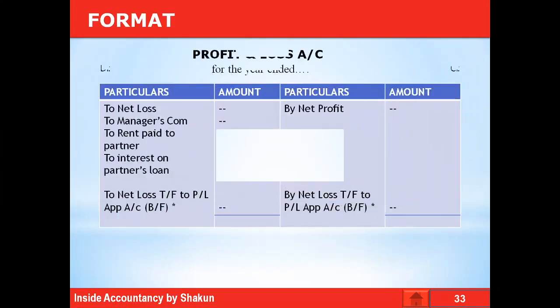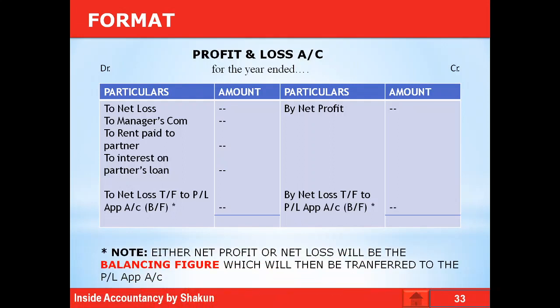Now let's look at the format of the P&L account. Since you are already aware of the format of P&L account, in this chapter you will be given certain entries relating to P&L account. On the credit side, the gross profit is shown, and on the debit side, the net loss is shown. Various charges — those items allowed in case of profits as well as losses — will be mentioned on the debit side. A few examples are: manager's commission, rent paid to a partner, and interest on partner's loan. The balancing figure on the debit side would mean net profit, and on the credit side it would mean net loss. Either net profit or net loss will be the balancing figure, which will then be transferred to the P&L appropriation account.